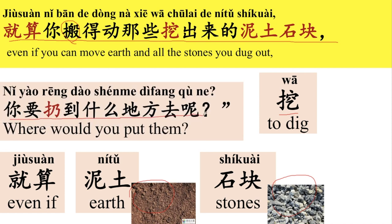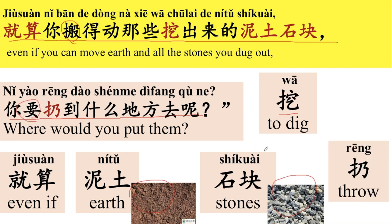你要扔到什么地方去呢？要 means will. 扔 means to throw. For example, 这件衣服旧了，我要扔了。就算你搬得动那些挖出来的泥土石块，你要扔到什么地方去呢？